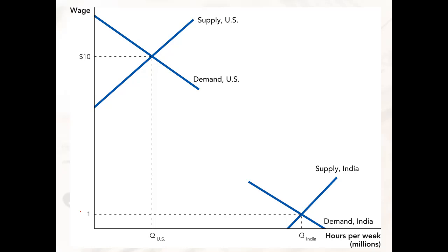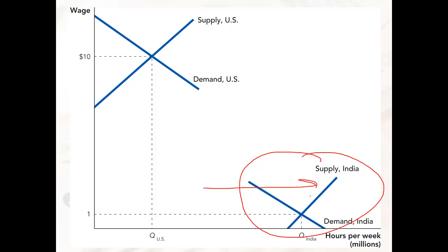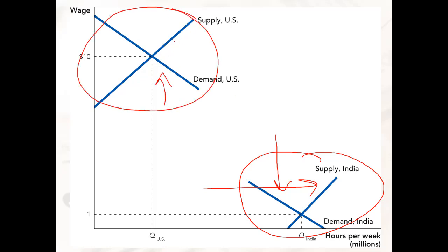In supply and demand terms, India is operating on its own supply and demand for labor, where the supply curve is very far to the right and the demand curve is fairly low. The U.S. has its own supply and demand where the demand curve sits pretty high and the supply curve sits more to the left. So unskilled workers in the U.S. earn something like $10 an hour, where unskilled workers in India earn maybe $1 per hour. It's just supply and demand, and the fact that each country has its own supply and demand conditions.